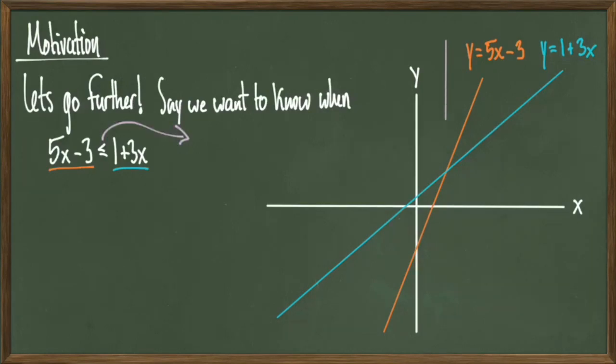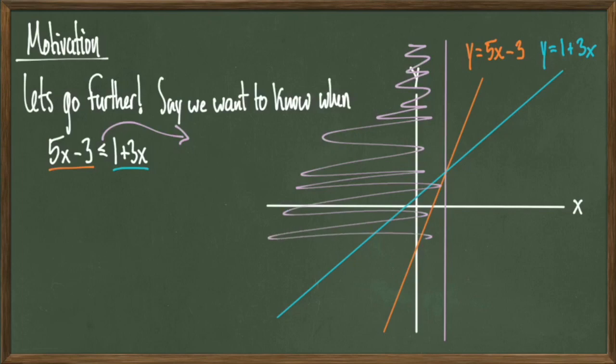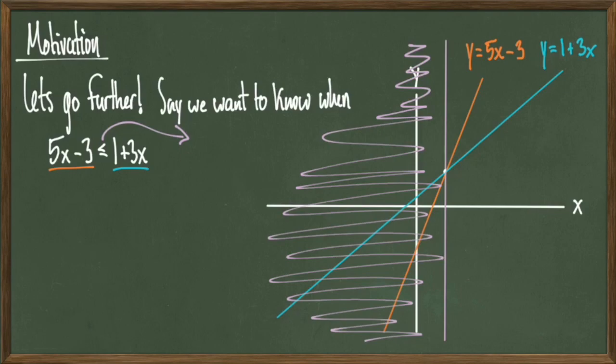If I shade it in, you'll notice that it's going to be the left half of the x-axis. Notice that my vertical purple line starts at where the two graphs intersect. And we know from the previous slide that these graphs intersect at the x value x equals 2.